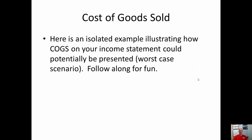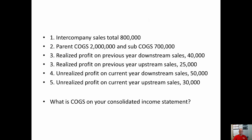Throughout this video and the previous one we're using cost of goods sold to adjust our income — a reduction for unrealized profit and an addition to income for realized profit. The next quick example is going to show you the calculation of cost of goods sold — let's call it the worst case scenario. How many adjustments can you possibly have for cost of goods sold? Here is as bad as it can get, and I would like you to calculate cost of goods sold for your consolidated income statement. We have intercompany sales, and these are the two cost of goods sold numbers from your individual company financial statements.